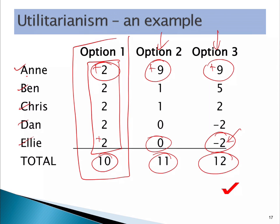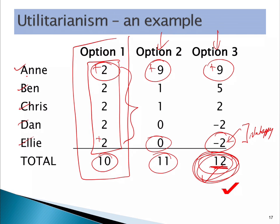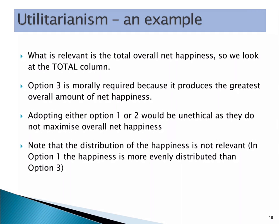The morally correct thing to do is option three. Why? Total happiness is maximized. It doesn't matter that some people were unhappy as a result. It's not about maximizing happiness among the most people — that would be option one — and that is not what utilitarianism is about. Utilitarianism is about total net happiness, which is option three. What's relevant is the total net happiness, and option three is what is morally required under this framework.